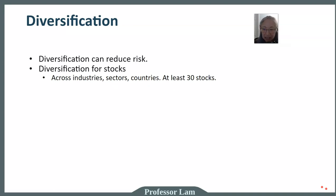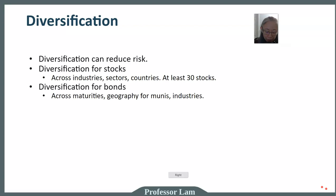The same is true for bonds. To diversify across bonds, you want bonds with different maturities and geographic spread. Municipal bonds — munis — are issued by municipalities, so you might buy some bonds issued by Massachusetts, some by California, and some by Texas, as well as diversifying across industries.